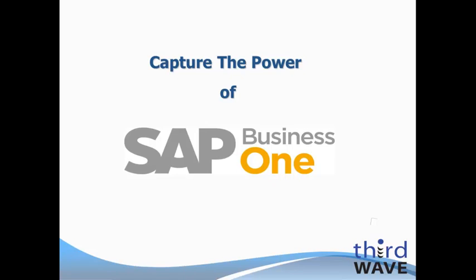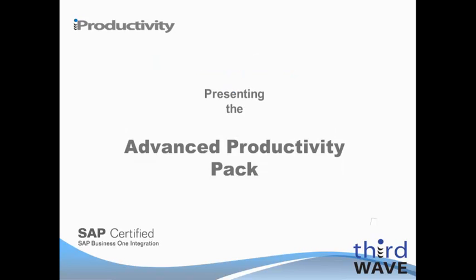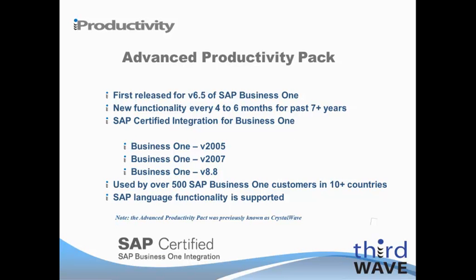Third Wave Business Systems is pleased to present our Advanced Productivity Pack for SAP Business One. This presentation will introduce you to the ten different functional areas provided by the Advanced Productivity Pack, designed specifically to enhance your SAP Business One experience. The Advanced Productivity Pack was introduced over seven years ago and is used by more than 500 SAP Business One customers around the world. New functionality added every four to six months makes the APP the most feature-rich document and information delivery tool available for SAP Business One.